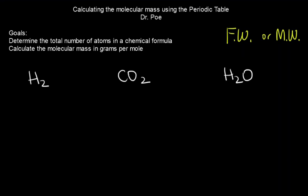So our goals are, first, you must determine the total number of atoms in your chemical formula, and then you're going to use the periodic table to calculate the molecular mass in grams per mole. And this is very quite easy. You just use the atomic mass and multiply it by the number of atoms.